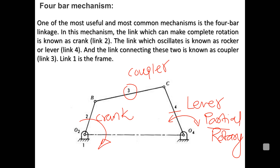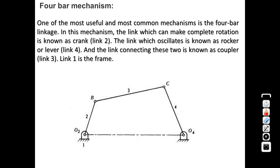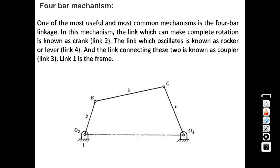Link 4, the lever or rocker, has relative motion compared to links 2 and 3. The four-bar linkage is one of the most common and useful mechanisms. The link with complete rotary motion is the crank, the link that oscillates is the rocker, and the connecting link is the coupler. By fixing different links in the same kinematic chain, different mechanisms are obtained.